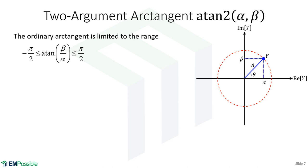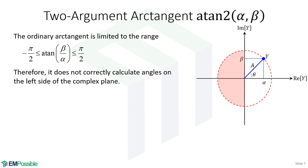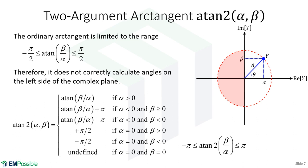Now let's talk about this two-argument arctangent. What's the problem with the ordinary arctangent? It is limited from −π/2 to +π/2, meaning in the complex plane we're ignoring the entire left half. If our phasor is on the left half of the plane, we would calculate incorrect angles using the ordinary arctangent. The two-argument arctangent is not that simple, but here's the basic recipe: if we're on the right-hand side of the plane, we can use the ordinary arctangent.